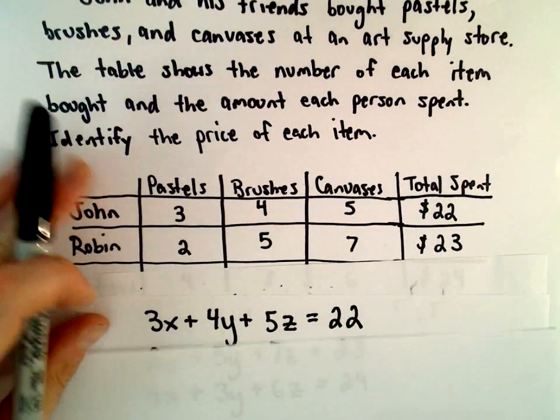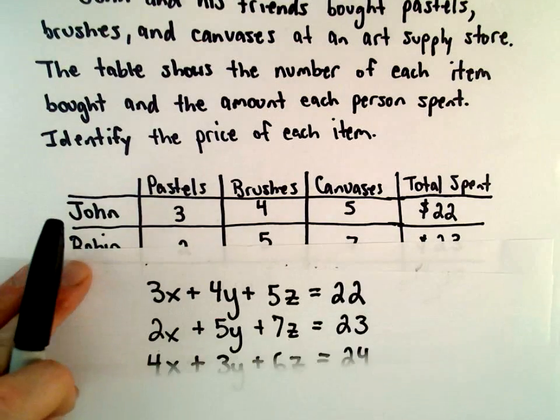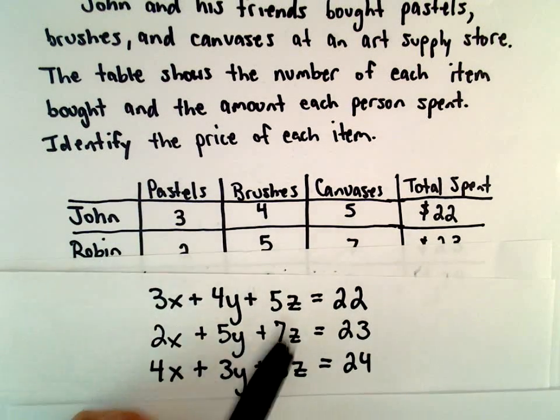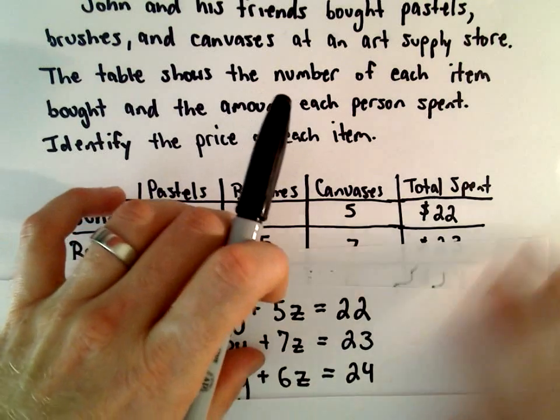From the second row, we would create the equation 2X plus 5Y plus 7Z equals 23.